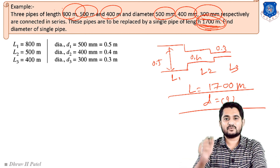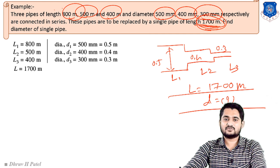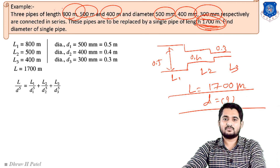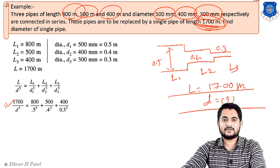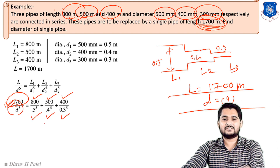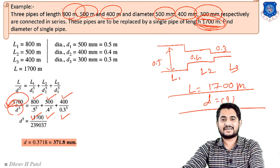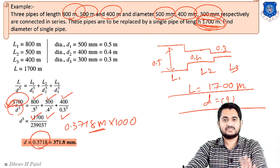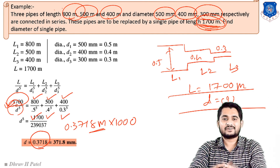Using the equivalent pipe relation: L/D⁵ = L1/D1⁵ + L2/D2⁵ + L3/D3⁵. Substituting values: 1700/D⁵ = 800/0.5⁵ + 500/0.4⁵ + 400/0.3⁵. After simplification, the diameter D = 0.3718 m, which is the final answer. Converting to mm: D = 371.8 mm. You simply have to remember the equation for the equivalent pipe.